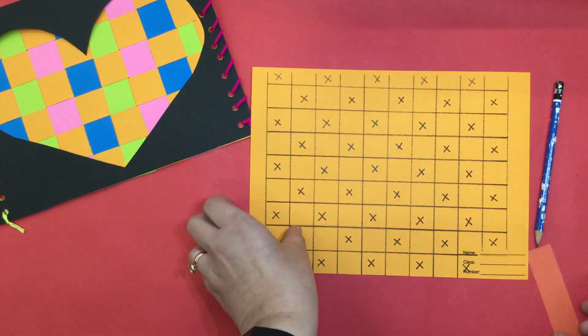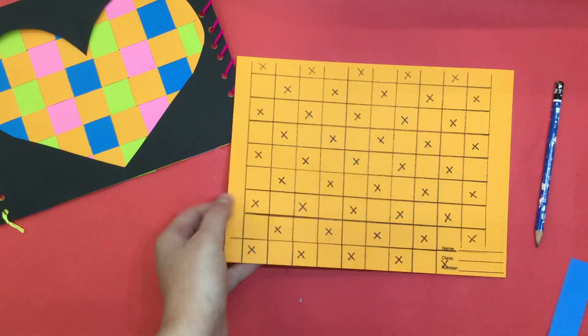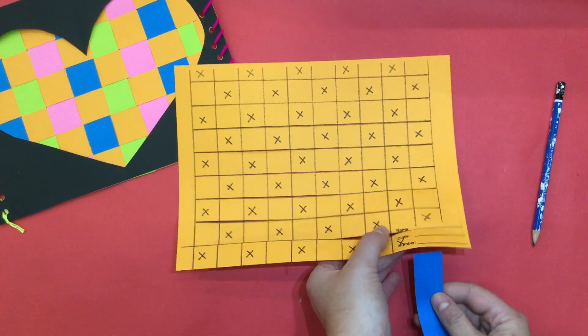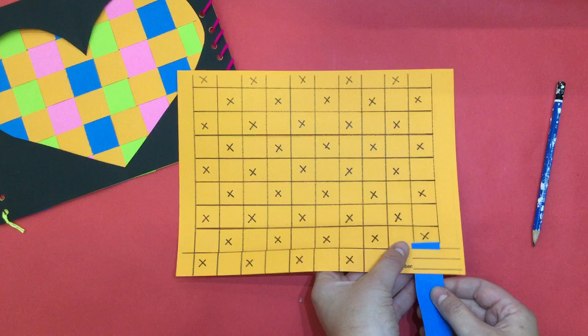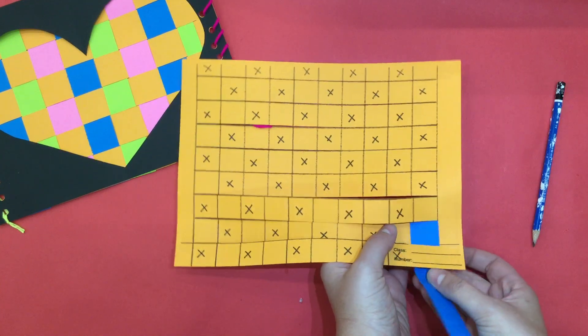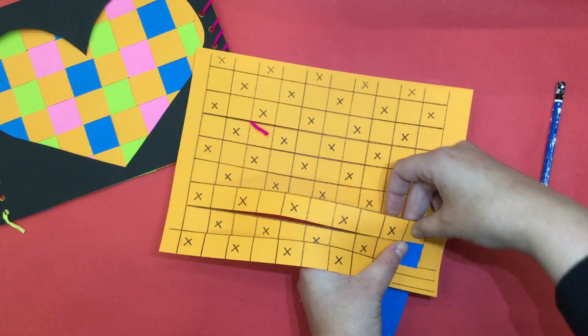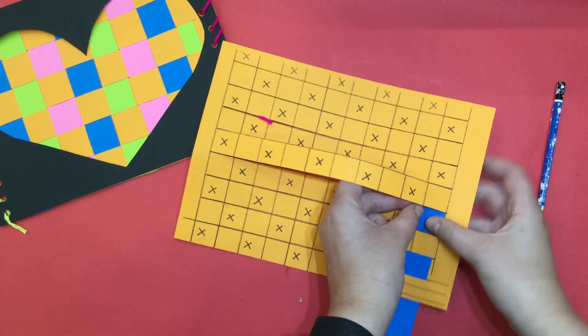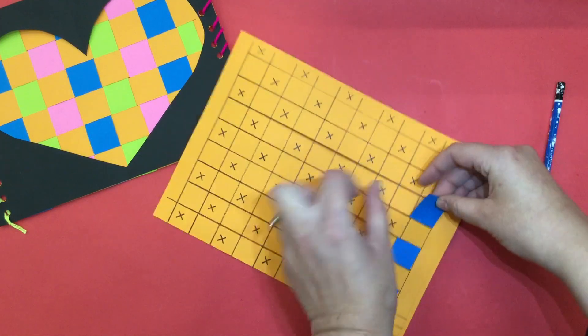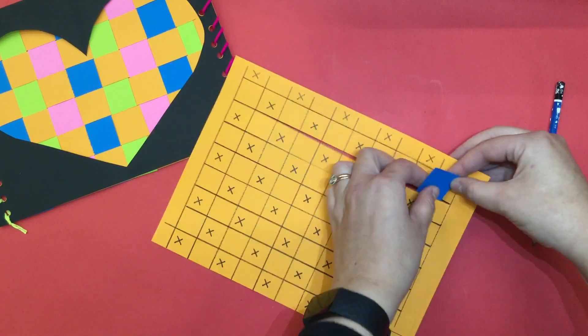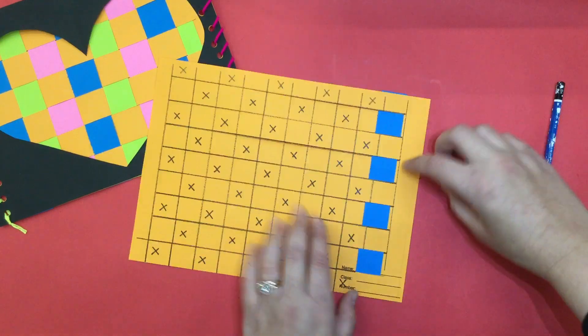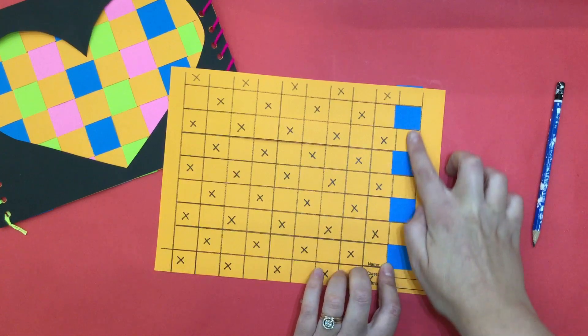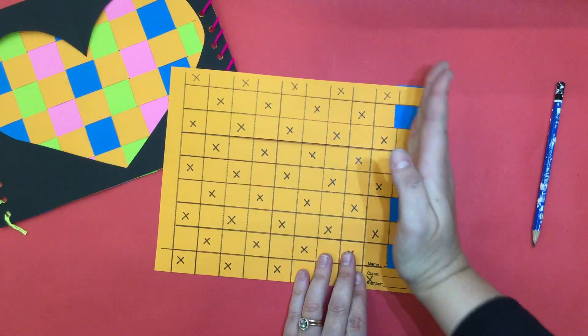So the goal for your weaving is to cover up all the X's on your paper. So I'm going to go behind my orange paper, in front of the X, behind the orange paper, cover up those X's, in front of the X, behind, in front, behind. Then I can scoot scoot scoot my paper over to the edge and I have covered up all the X's for that column.